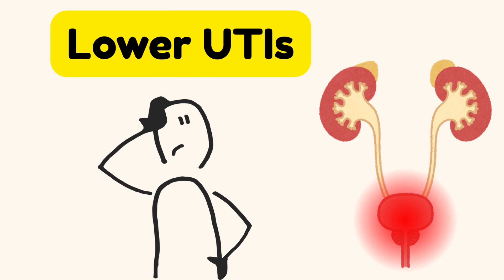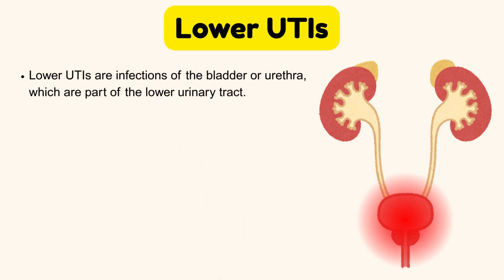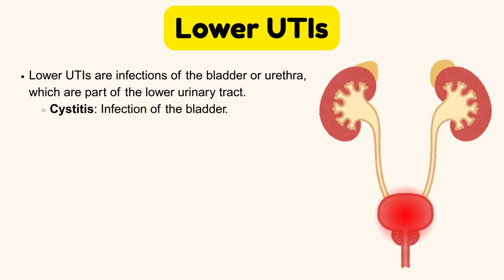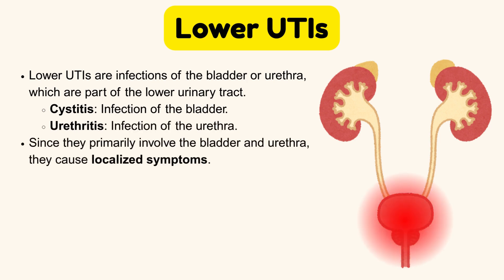Now we will discuss lower UTIs. Lower UTIs are infections of the bladder or urethra, which are part of the lower urinary tract. For example: cystitis, which is the infection of the bladder, and urethritis, which is the infection of the urethra. Since they primarily involve the bladder and urethra, they cause localized symptoms.